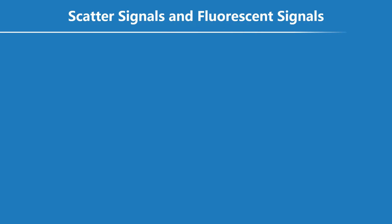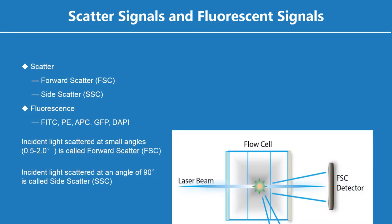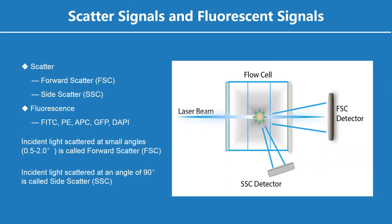Light scattered from cells or particles is detected as they pass through the laser beam. A detector in front of the light beam measures forward scatter and several detectors to the side measure side scatter. Fluorescence detectors measure the fluorescence emitted from positively stained cells or particles.